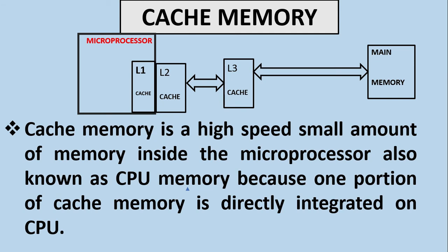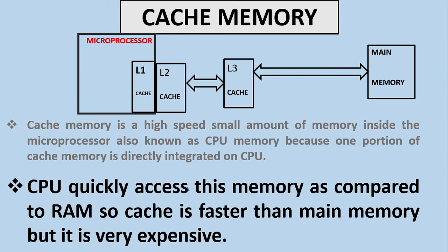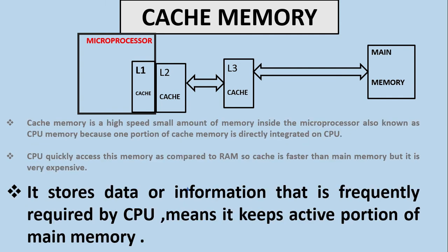Cache memory is a high-speed, small amount of memory inside the microprocessor, also known as CPU memory, because one portion of cache memory is directly integrated on the central processing unit. The CPU quickly accesses this memory compared to RAM, so cache is faster than main memory but is very expensive. It stores data or information that is frequently required by the CPU, meaning it keeps the active portion of main memory.